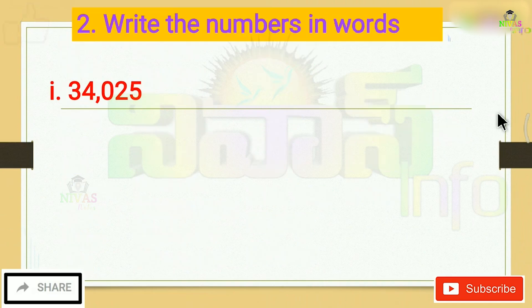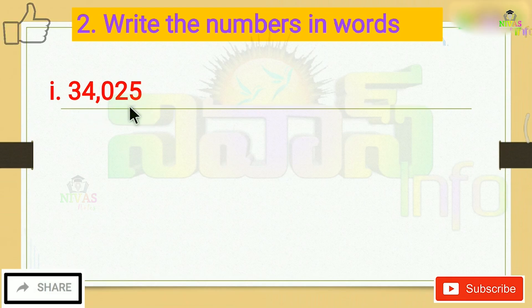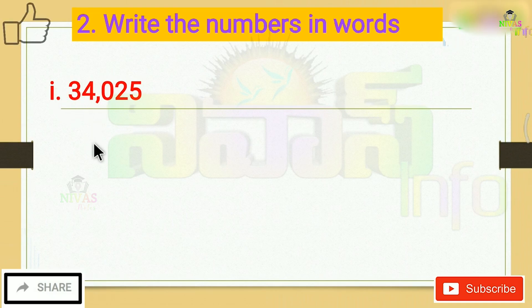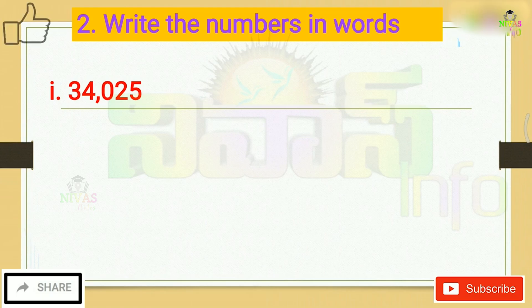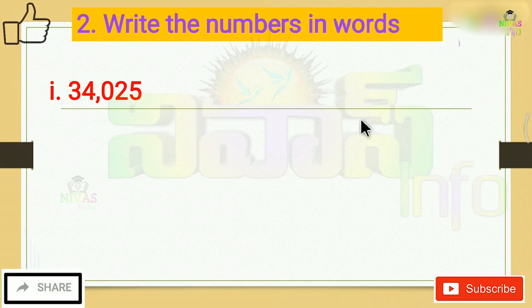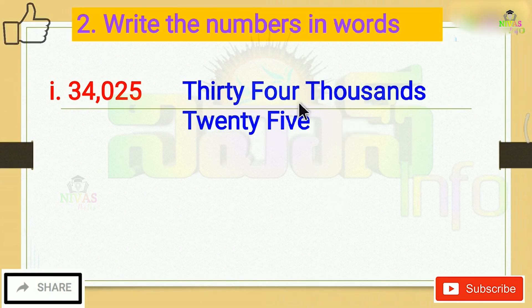Now the first question: 34,025. If we want to write 34,025 in words — we have 30,000 and 4,000, so thirty-four thousand. Then we have 25, which is 20 and 5, so twenty-five. Therefore, 34,025 is thirty-four thousand and twenty-five. It is easy to learn these words.